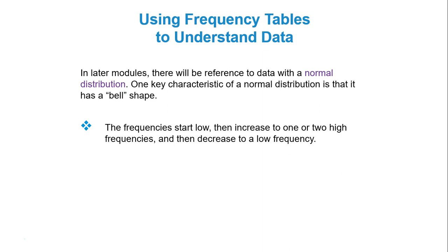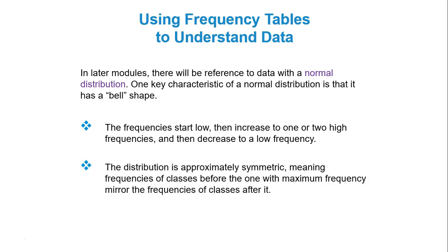So they start low, they get high, high, and then they get low again. The distribution is approximately symmetric, meaning frequencies of classes before the one with maximum frequency are about the same or mirror the frequencies of classes after it.